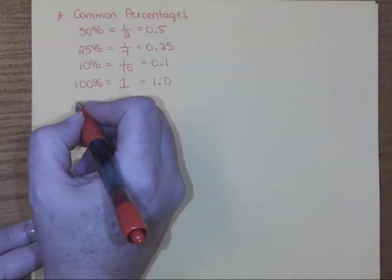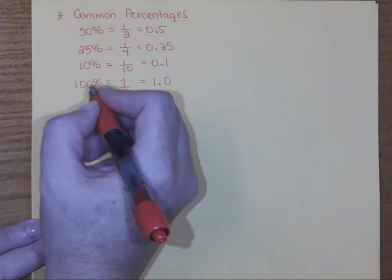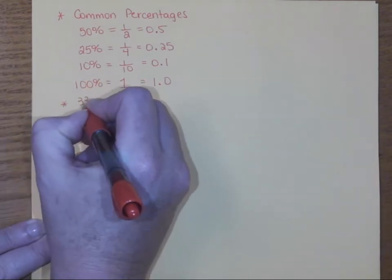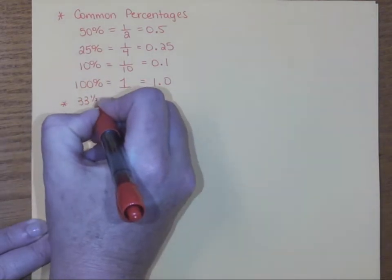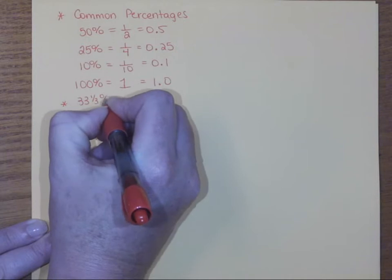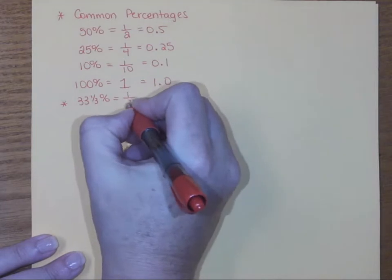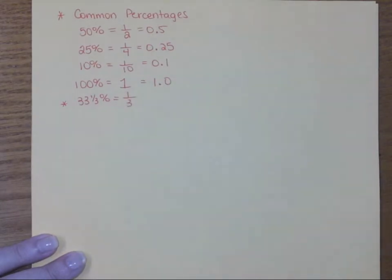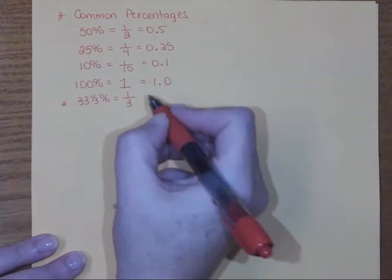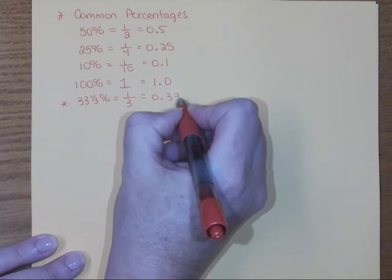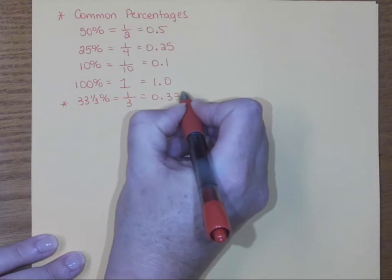Then maybe some that you are less familiar with but that you'll need to get familiar with: 33 and a third percent. That's literally 33⅓ over 100, which just equals one out of three, or 0.333 with a bar over it.